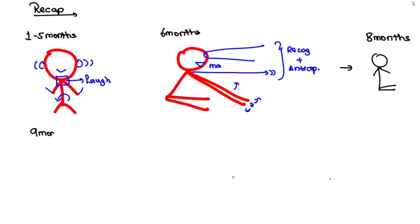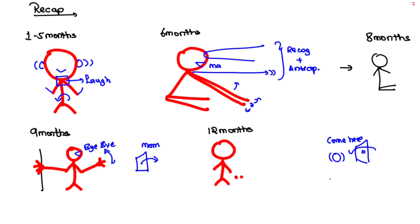For eighth month, remember sits without support. In ninth month: stands holding on, immature pincer grasp, says and waves bye bye to mother. In twelfth month: comes when called, stands without support, walks but falls, creeps will get the ball with mature pincer grasp and plays with it, one to two meaningful words. That's it for today. In the next video we will cover milestones up to five years.